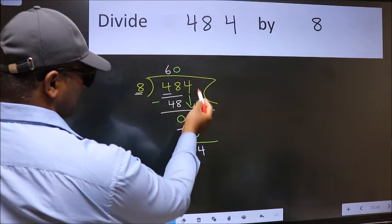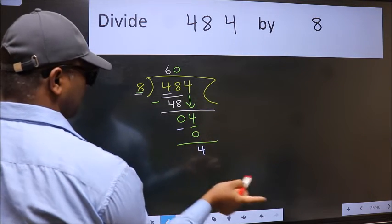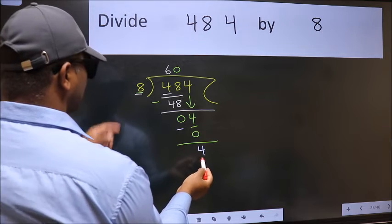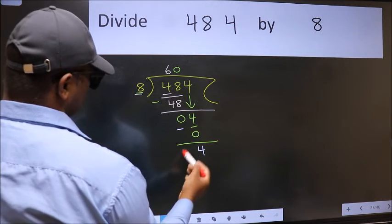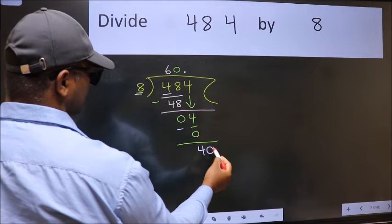Over here we did not bring any number down, and 4 is smaller than 8. So now we can put dot and take 0.